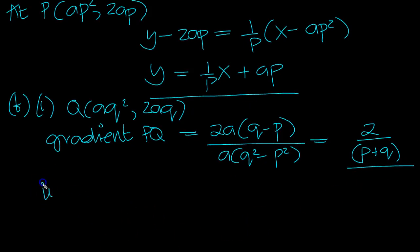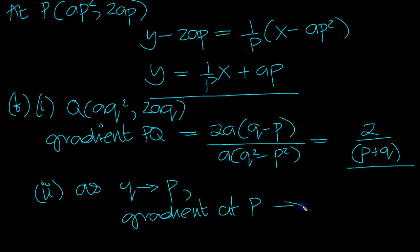Now, as Q tends to P, we'll get the tangent at the point. So Q tends to P, we'll get gradient at P. Q tends to P, we'll get 2 over 2P, which is 1 over P. That's it.